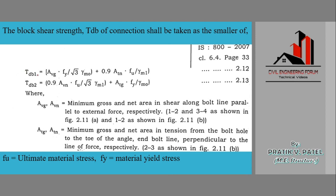TbD1 will be equal to Avg into Fy upon root 3 into gamma m0 plus 0.9 into Atn into Fu upon gamma m1. Similarly, TbD2 will be equal to 0.9 into Avn into Fu upon root 3 into gamma m1 plus Atg into Fy upon gamma m0. It is given in IS 800 clause 6.4, page 33. So we don't have to remember for the exam point of view.